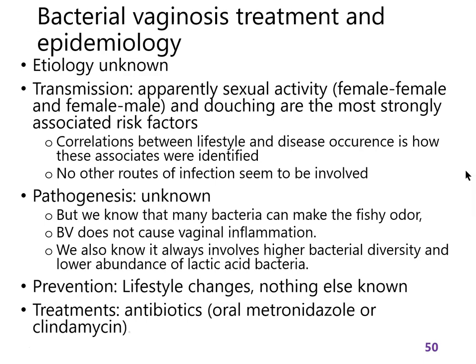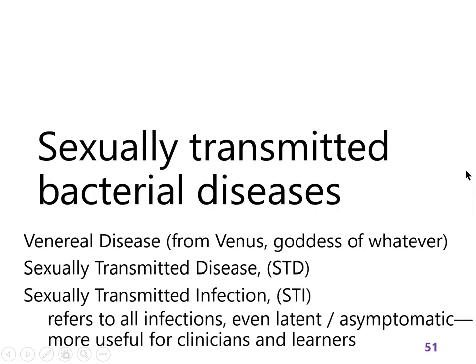One treatment approach is antibiotics, which cause a drastic and somewhat random change in the microbial community by killing off certain species but not others. This gives the body a chance to regain control of the microbiota. Since we don't associate bacterial vaginosis with any one specific pathogen, it's not treated like a classic infectious disease caused by a particular bacterium.